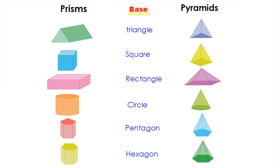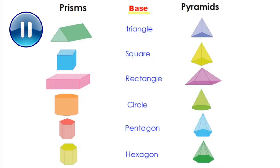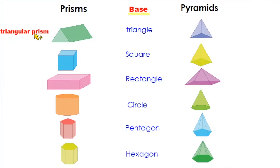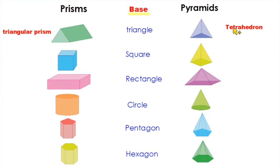Pause the video and identify the types of prism and pyramid by yourself. One very important thing: the type of prism or pyramid is determined by the shape of its base. When the prism has a triangle as its base, it is called a triangular prism. A pyramid with a triangular base has a specific name — the tetrahedron — and all its faces are triangles.